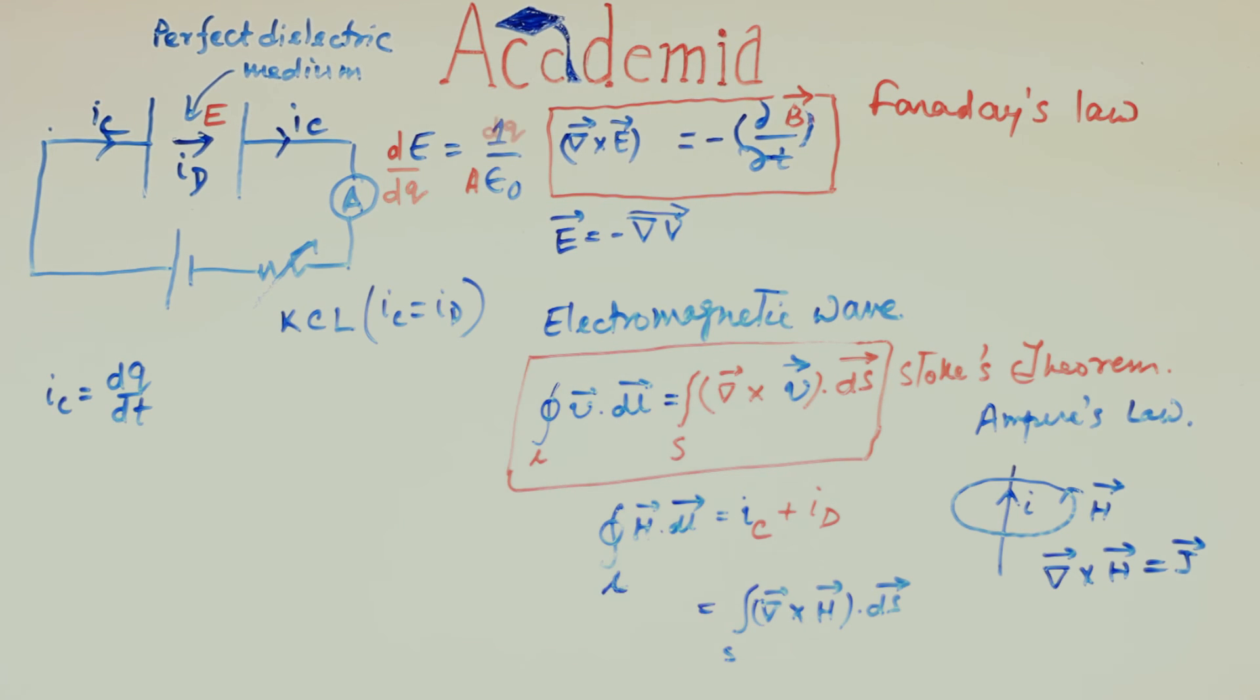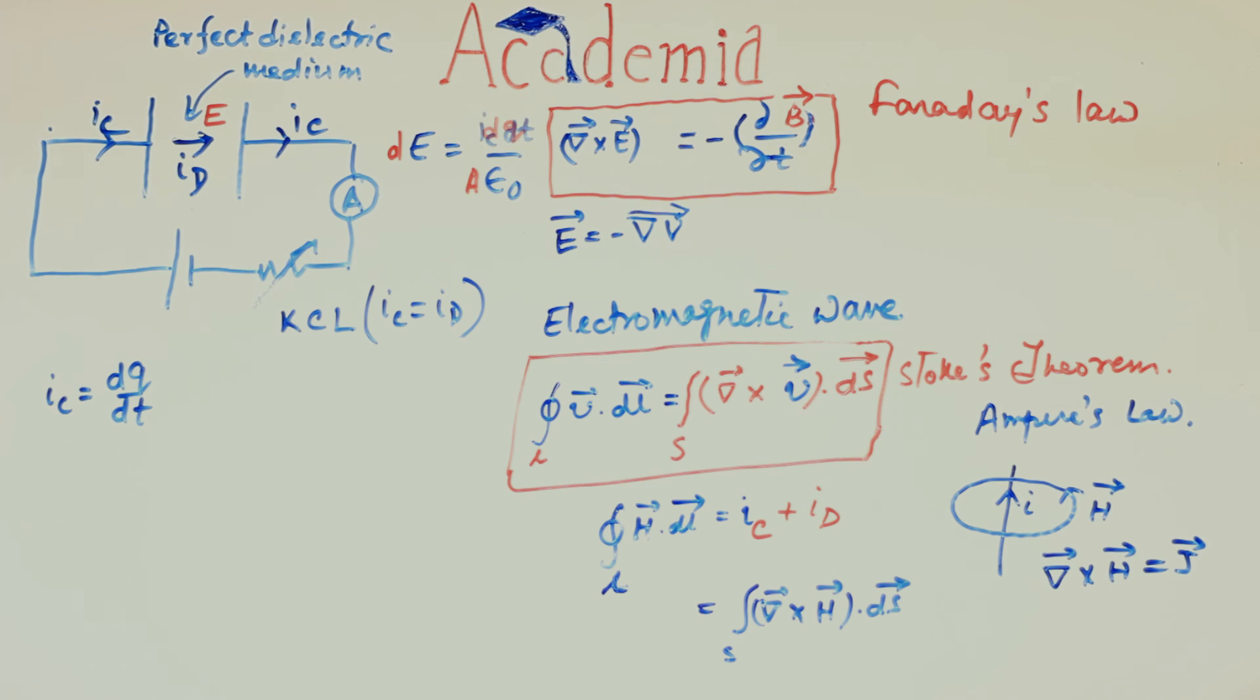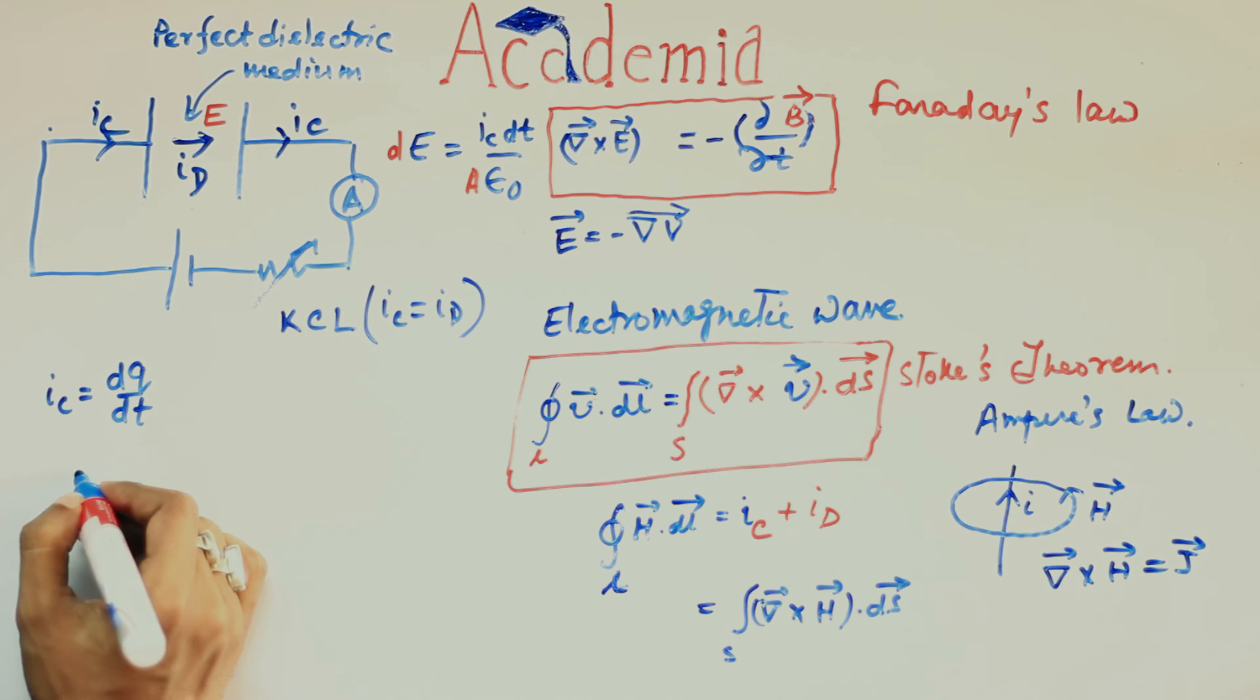So, dE is equal to this. Wait. From this relation, we can write dQ is equal to IC dt. So, from this relation, IC can be written as this.